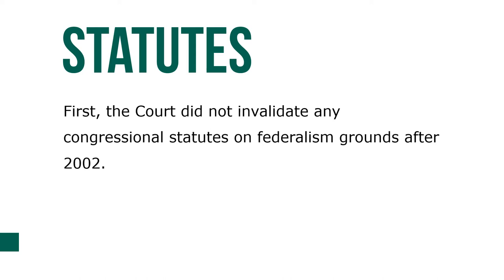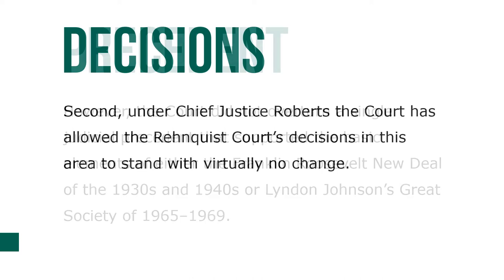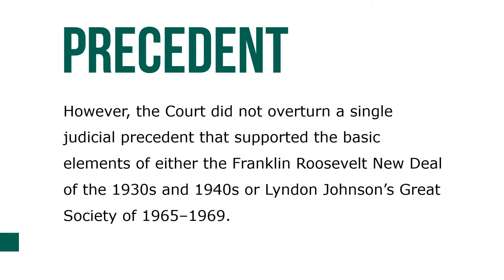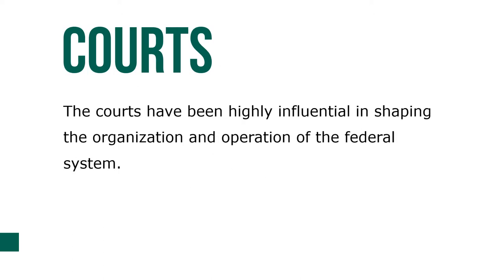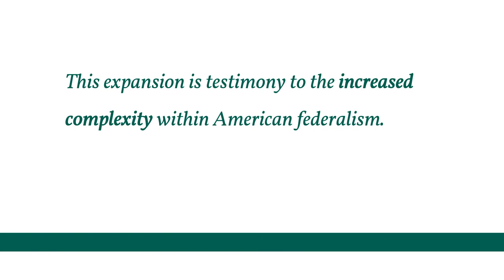Three trends are worth noting regarding recent Supreme Court federalism-related decisions. First, the Court did not invalidate any congressional statutes on federalism grounds after 2002. Under Chief Justice Roberts, the Court allowed the Rehnquist Court's decisions to stand with virtually no change; however, the Court did not overturn a single judicial precedent that supported the basic elements of either the Franklin Roosevelt New Deal of the 1930s–1940s or Lyndon Johnson's Great Society of 1965–1969. The courts have been highly influential in shaping the organization and operation of the federal system, a testimony to the increased complexity within American federalism.